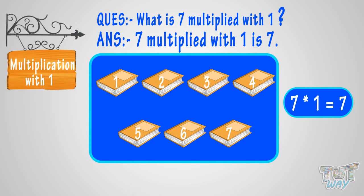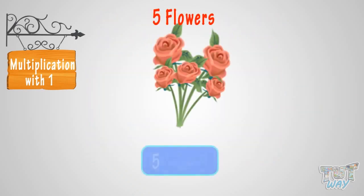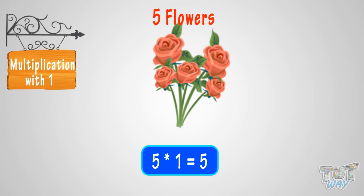Good. So, what have we learnt? We have learnt that anything multiplied with one is itself, as one times any number of things will be the same number of things.